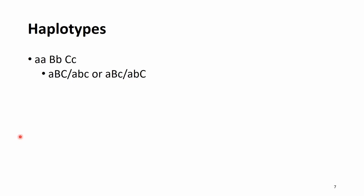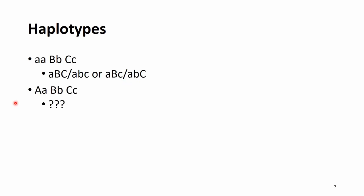It becomes more interesting the more heterozygotes we have on our genome, because this actually creates options for how the haplotypes could be distributed. We have three loci here and two of them are heterozygotes — locus B and C. If we look at the pairwise combinations of these alleles then we could arrive at actually two solutions. If you look at the alleles in these haplotype pairs, the genotypes will always end up with this same summary genotype, but the two haplotype pairs are different from each other.